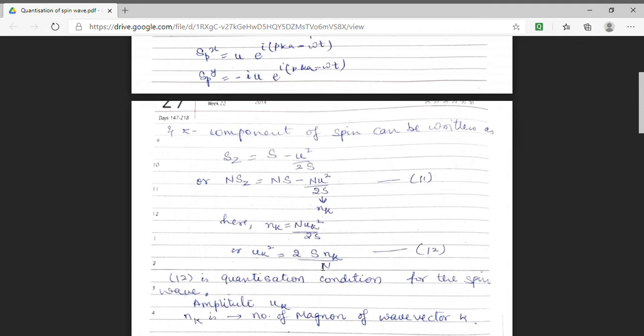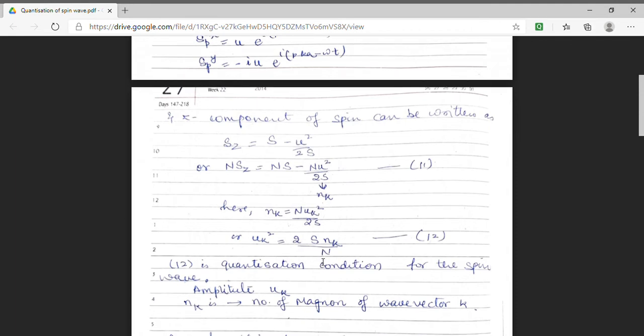This gives me the amplitude of magnons. And this condition is termed as quantization condition for spin wave.